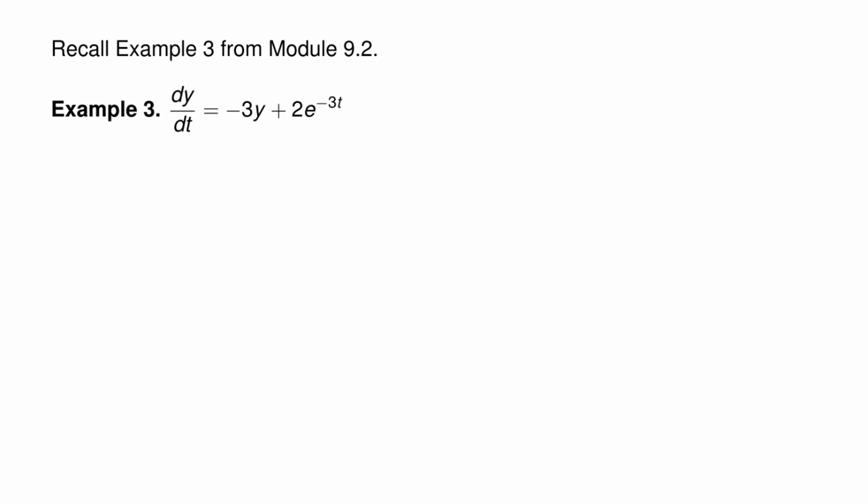Recall example 3 from module 9.2. We applied the method of the lucky guess to the differential equation dy/dt = -3y + 2e^(-3t). We used a somewhat unusual guess of the form alpha times t times e^(-3t), and at the time, I said I would justify this unusual guess. I can do that now using the method of the magic function.